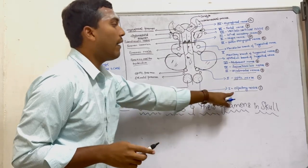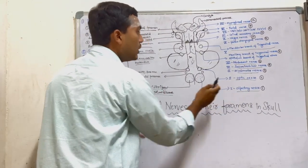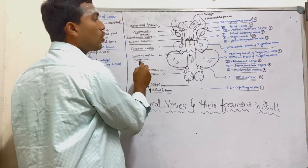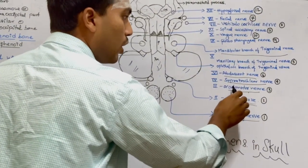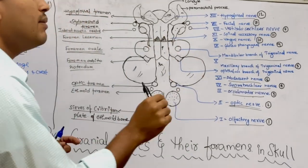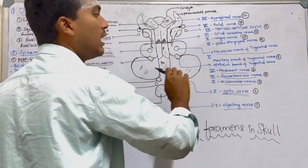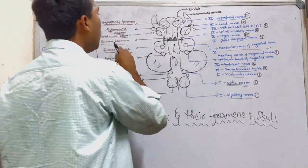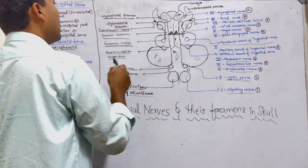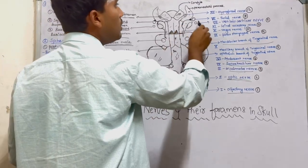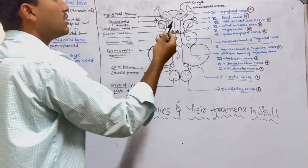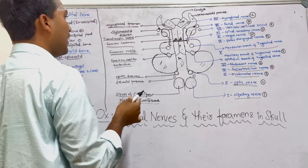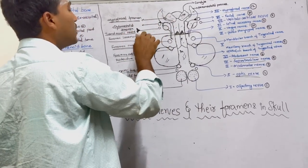In summary: through the sieves of the cribriform plate, the first cranial nerve (olfactory) arises. Through the optic foramen, the second cranial nerve (optic) arises. Through the foramen orbitorotundum, the third (oculomotor), fourth (trochlear), ophthalmic branch, maxillary branch, and sixth (abducent) nerves arise. Through foramen ovale, the mandibular branch of the trigeminal nerve arises. Through the jugular foramen, the glossopharyngeal, vagus, and spinal accessory nerves arise. Through the stylomastoid foramen, the facial nerve arises. In the hypoglossal foramen, the hypoglossal nerve arises. The vestibulocochlear nerve lodges in the internal acoustic meatus.